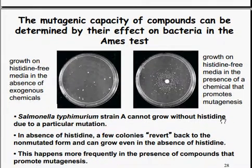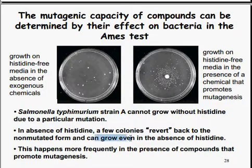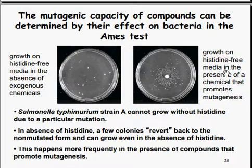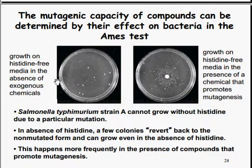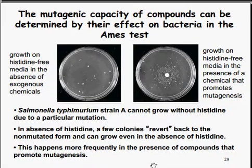The mutagenic capacity of compounds can be determined by their effect on bacteria in the Ames test. The Salmonella typhimurium strain cannot grow without histidine due to a particular mutation. In the absence of histidine, a few colonies revert back to the non-mutated form and can grow even without histidine. This happens more frequently in the presence of compounds that promote mutagenesis. Growth on a histidine-free media with mutagenic chemicals shows quite a lot of colony growth, making it a good way to test a compound's mutagenic capacity.